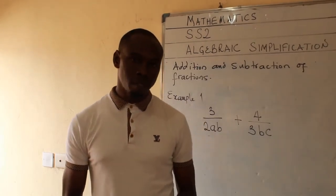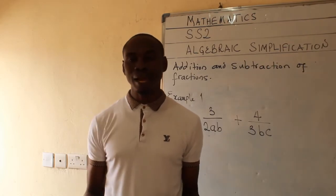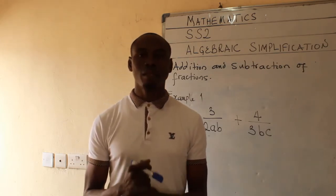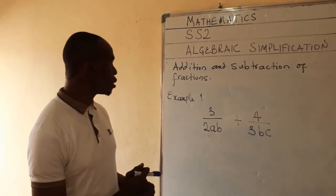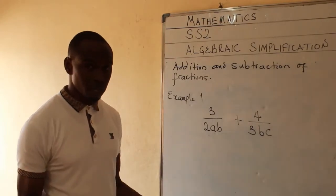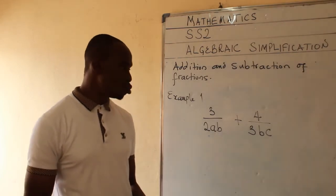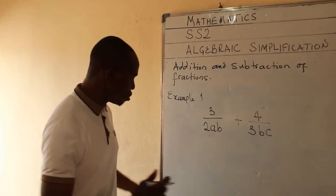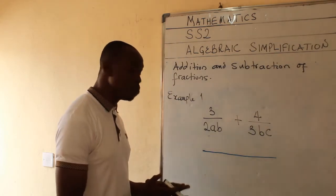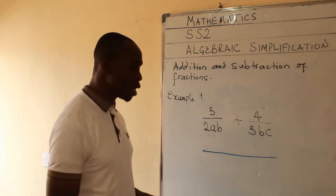We have learned simplification of algebraic fractions, how to multiply and divide algebraic fractions, and now in our third and final lesson objective we will look at addition and subtraction of algebraic fractions. The process is very similar to ordinary fractions — you look for the LCM of the denominators and divide and multiply accordingly.